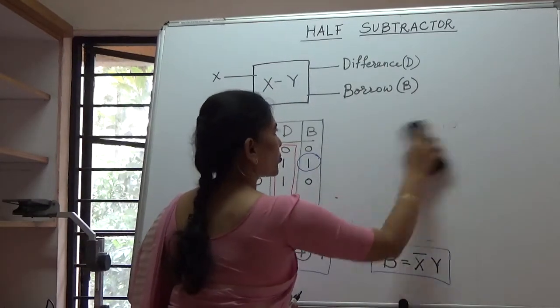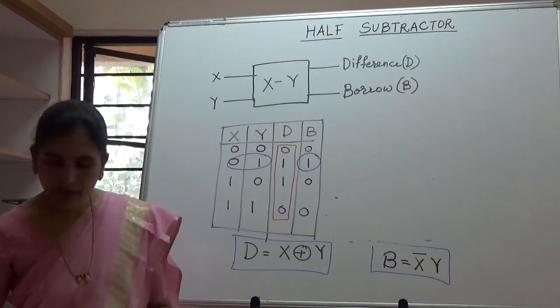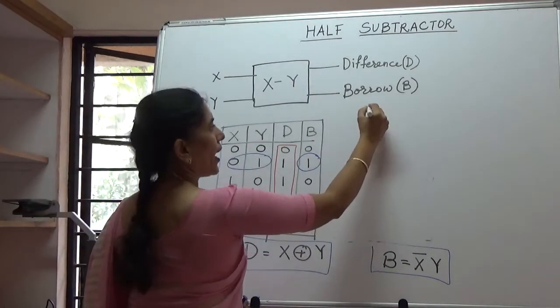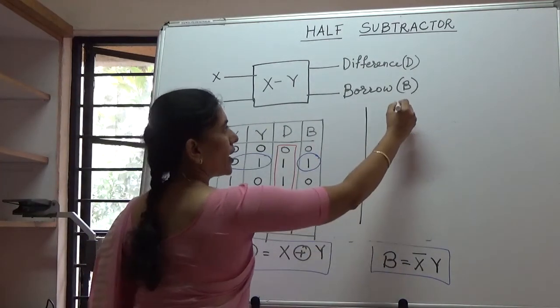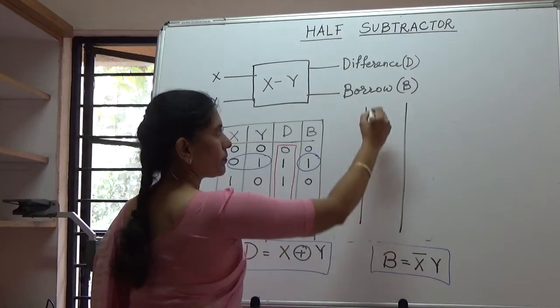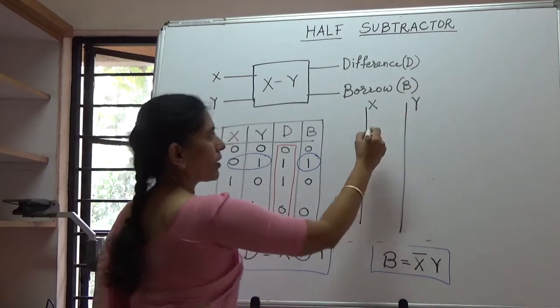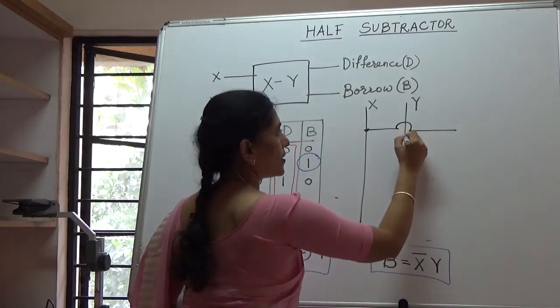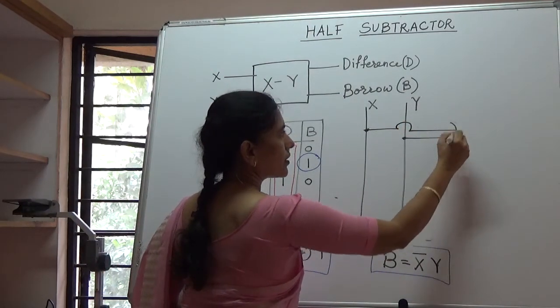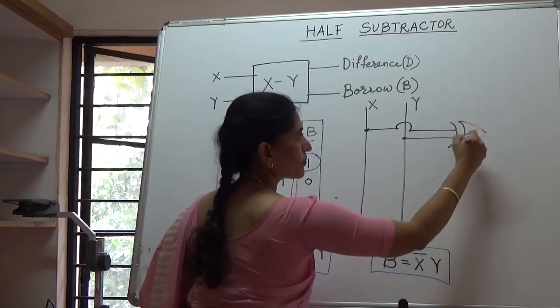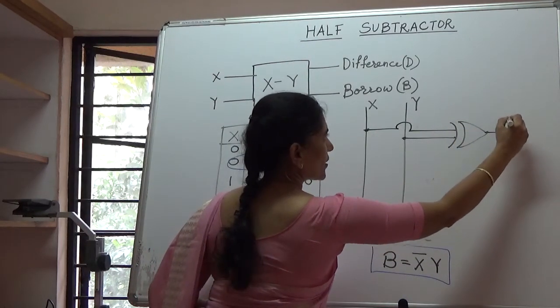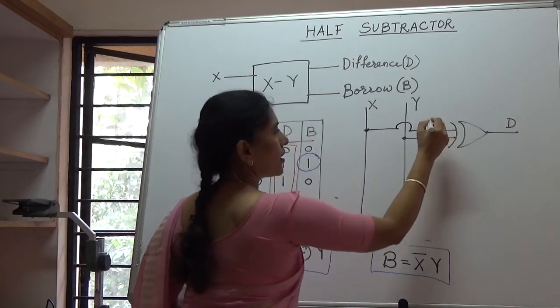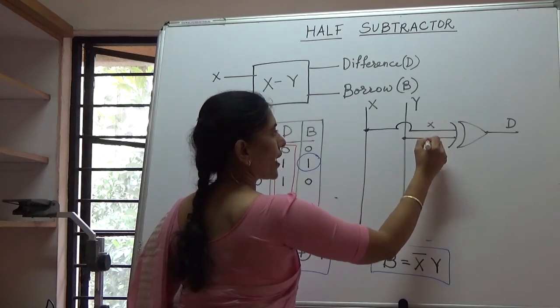We can draw this half subtractor as two inputs, X and Y. These two will be connected as inputs to an XOR gate to generate the difference D. So these are two inputs, X and Y.